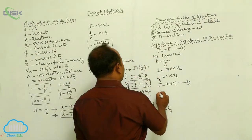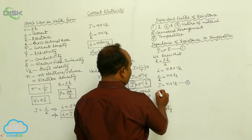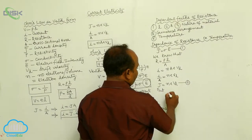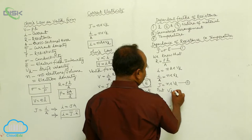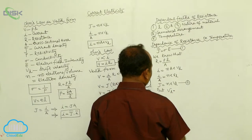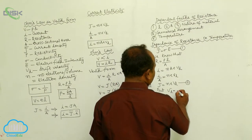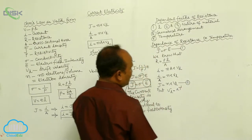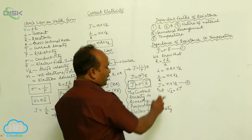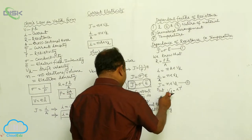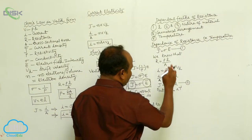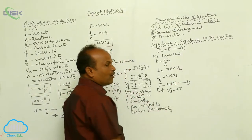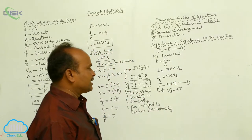From the drift velocity, V D is equals to A into tau. What is V D? V D is the drift velocity. What is A? A is the acceleration. What is tau? Tau is called relaxation time.